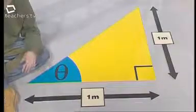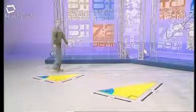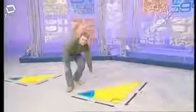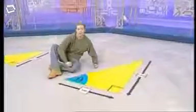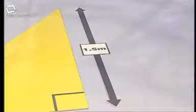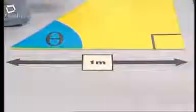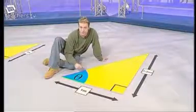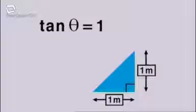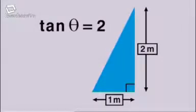It's a ratio, so as long as the units are the same, we can ignore them. So how does tan theta vary with the size of the angle? For this taller triangle, theta is bigger, and the tangent of theta is the opposite, which is 1.5, divided by the adjacent, which is one. So tan theta is 1.5. As the angle gets bigger, so does the value of the tangent ratio.